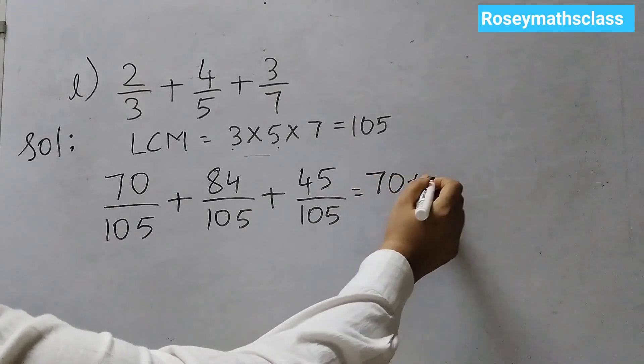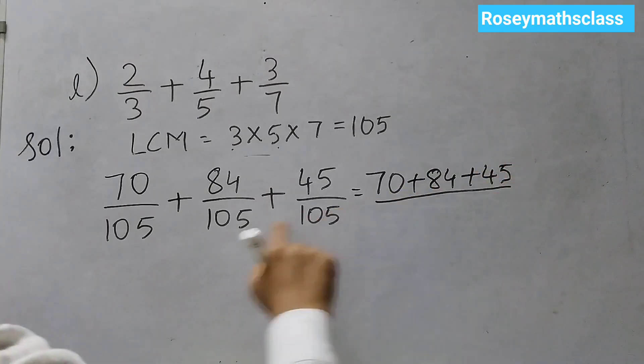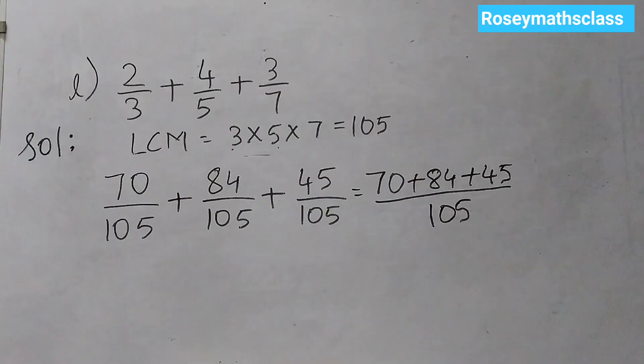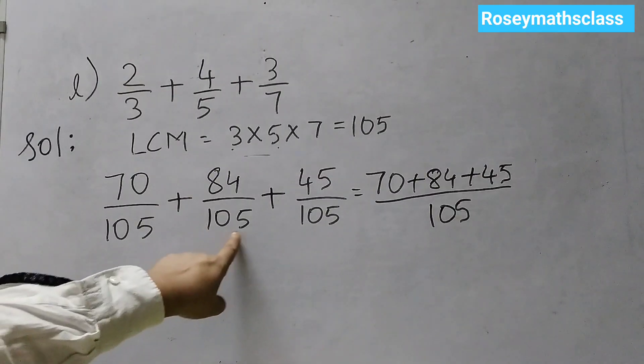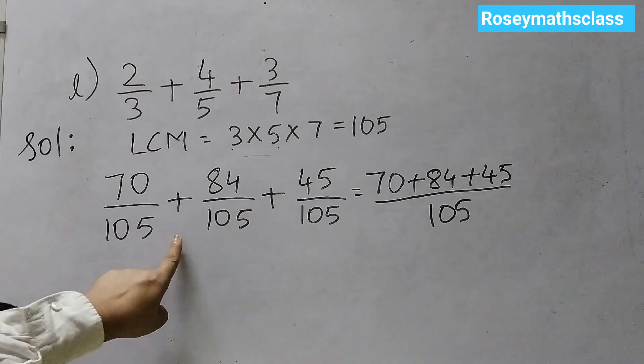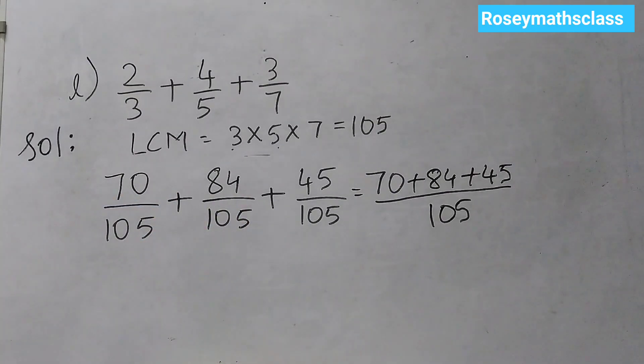70 plus 84 plus 45. And denominator just remains 105. Some students they do the mistake of adding 105, 105, 105. They will add all the denominators. No, we never add the denominators. We just add the numerators and keep the denominators same.